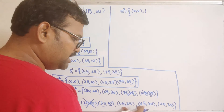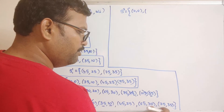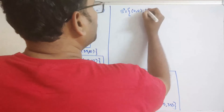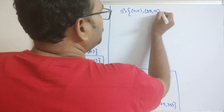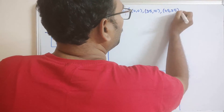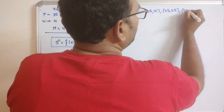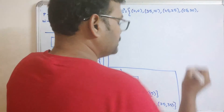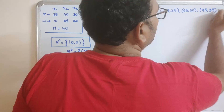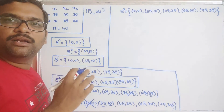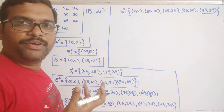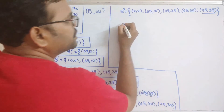After removing the dominated element, S3 = {(0,0), (35,10), (45,25), (65,30), (75,35)}. There is no more dominance. The maximum profit we can achieve is 75.